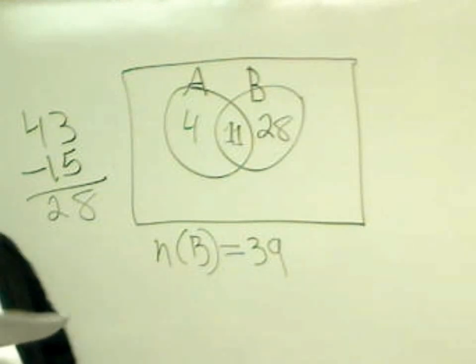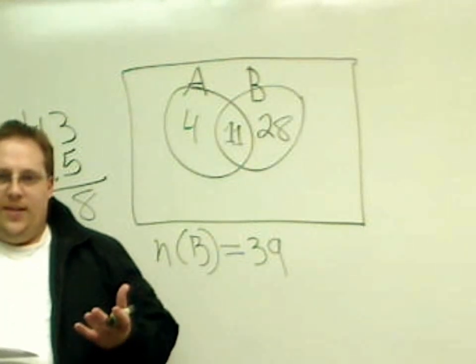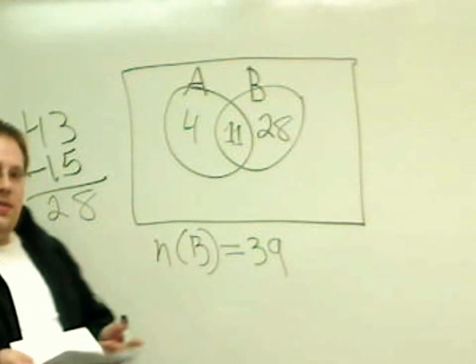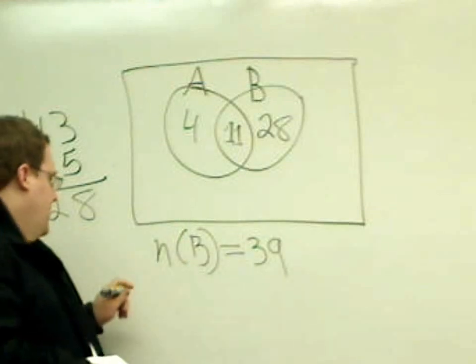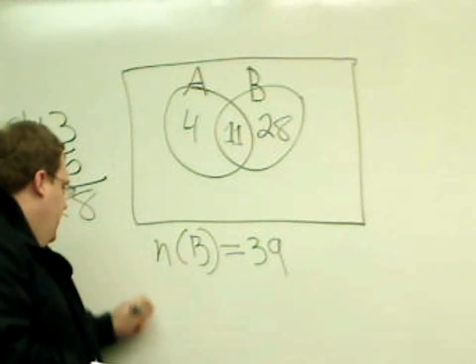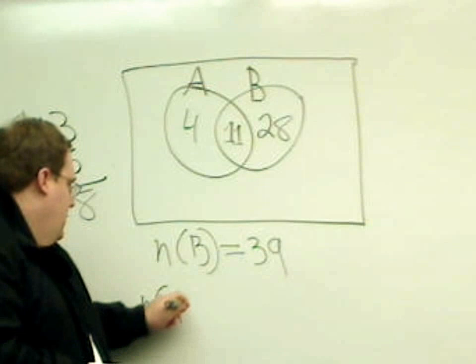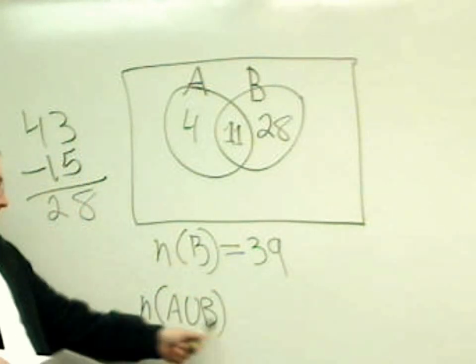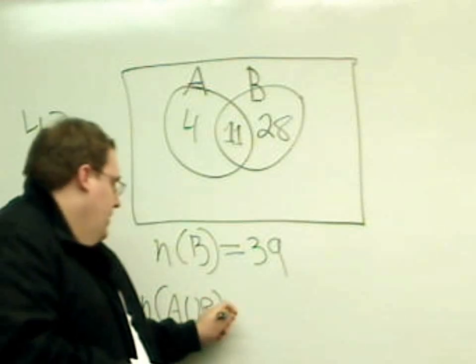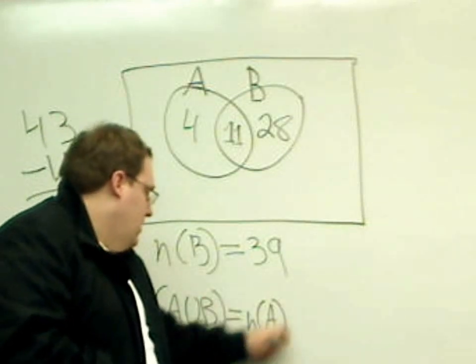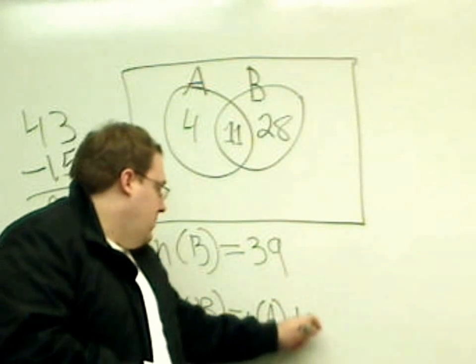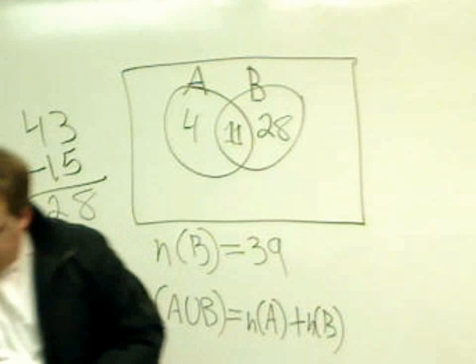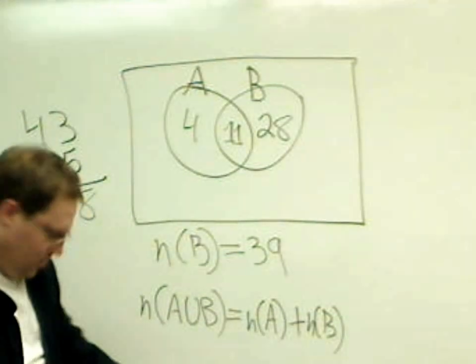Now, I also want you to know what the formula is that we could have used for this. The formula that we can use for sets like this states: if I want to know the number of things that are in A or B, A union B, that's going to equal the number of things in A plus the number of things in B. Now, I'll stop there for a minute.